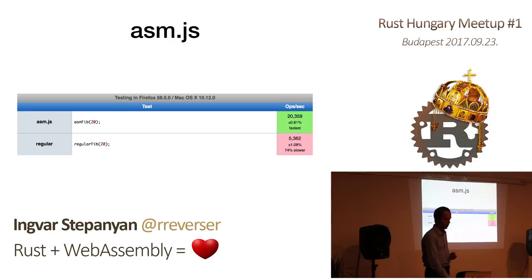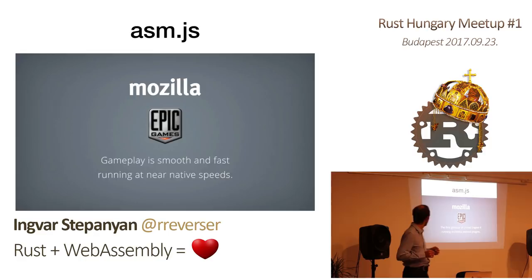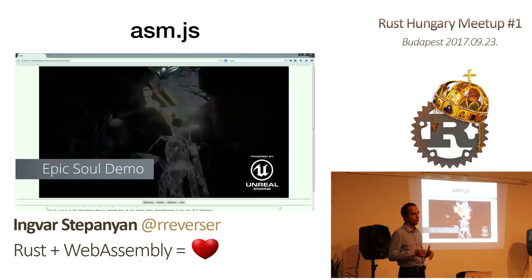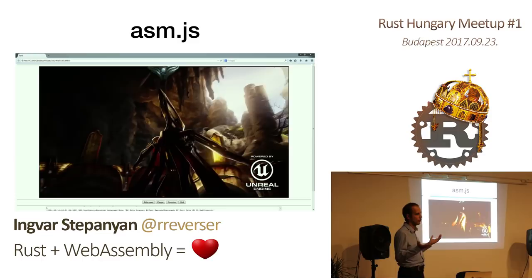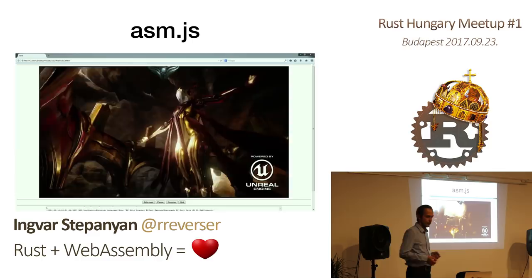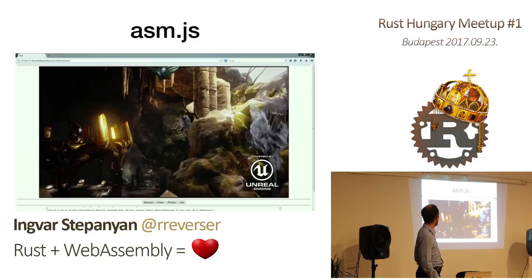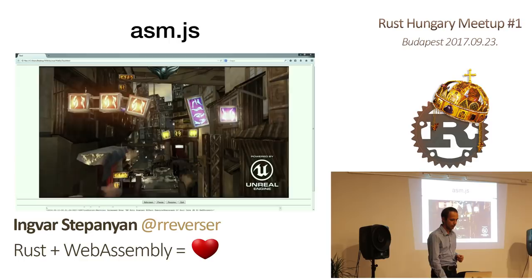And it works even for complicated demos. Mozilla ported the entire Unreal Engine to Asm.js by cross-compiling it from C and C++, and it worked pretty smoothly — close to native, no noticeable lags. That couldn't be achieved with regular JavaScript, but in this case they could just cross-compile the same code without extra effort and it just worked.